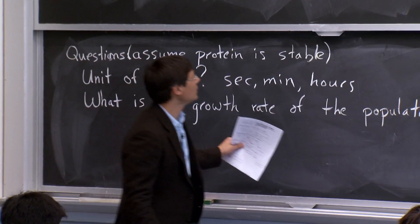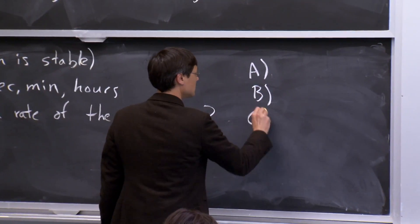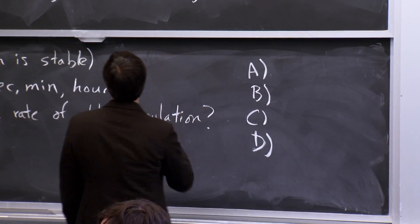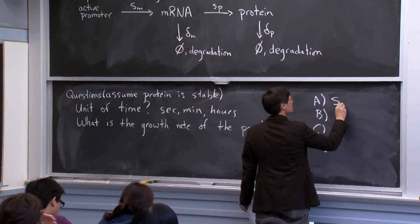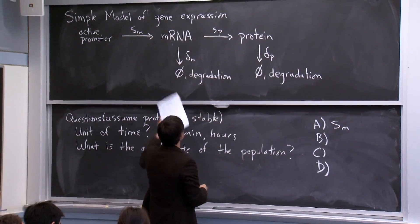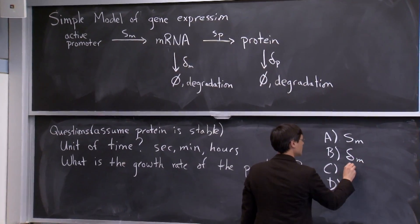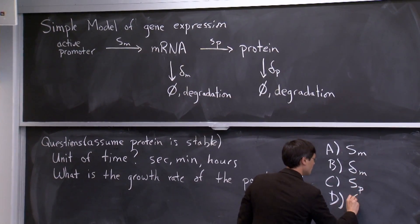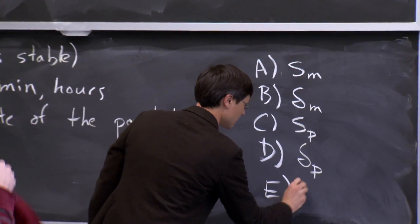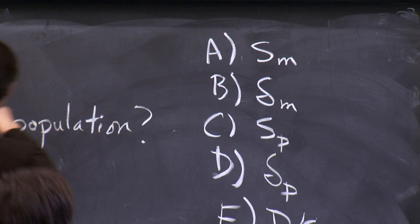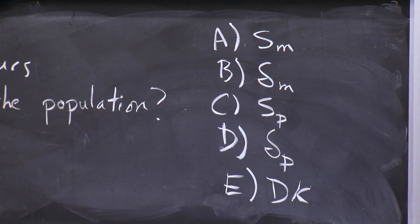So we'll go ahead and vote. We're going to do some A, B, C, D questions. We'll say: A is the synthesis rate of the mRNA, B is the degradation rate for the mRNA, C is the synthesis rate for the protein, D is the degradation rate for the protein. In general, any of the questions we're going to do, you can do some combination of these by putting things in numerator and denominator.